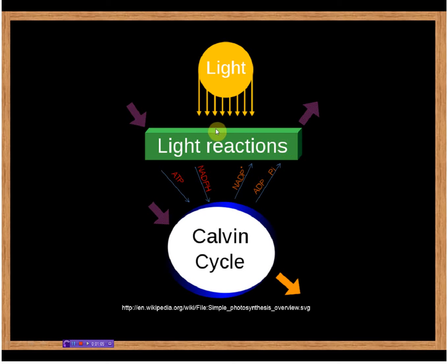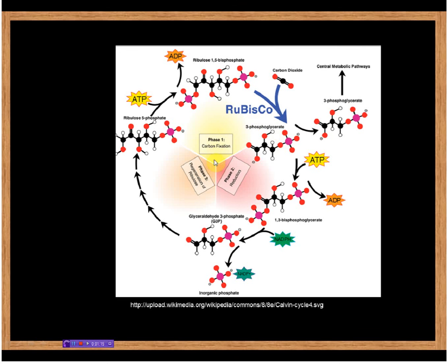Now we've discussed the light reactions in detail, and the Calvin cycle in general can be found in all major textbooks and it's usually depicted as this cycle that has three different stages.